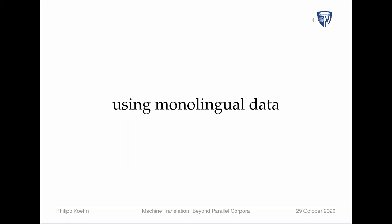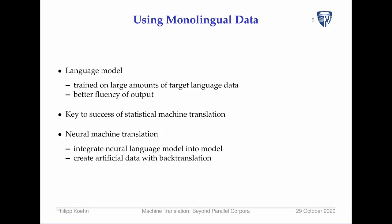Let's start with looking at monolingual data. The first use of monolingual data we already encountered when discussing statistical machine translation was the use of a language model. A language model is trained on large amounts of text in the target language, and its purpose is to have a better model of fluency — of knowing what is acceptable language use in the target language. In statistical machine translation this was a key success, but rather surprisingly, in neural machine translation there has not been much success integrating neural language models into the model.